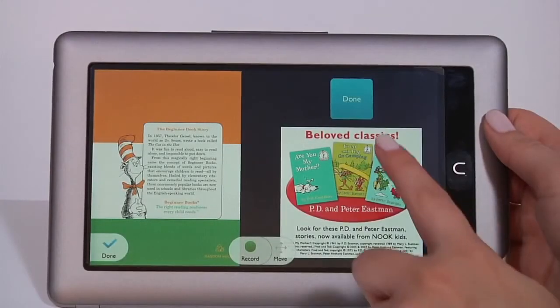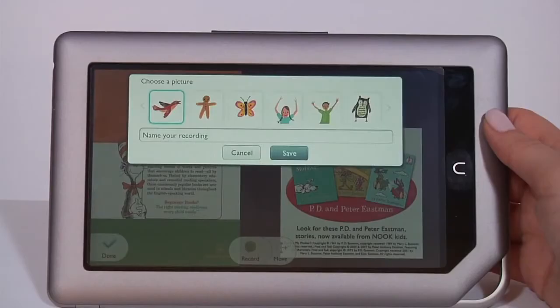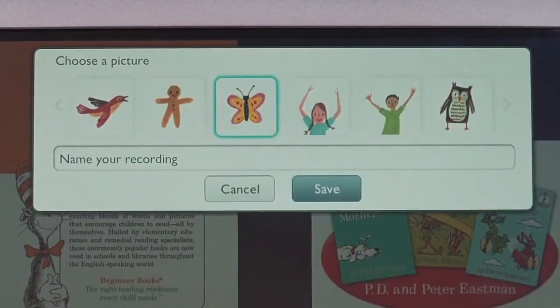When you finish your recording, tap Done. Then save your recording with a picture and give it a title.